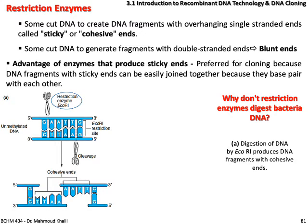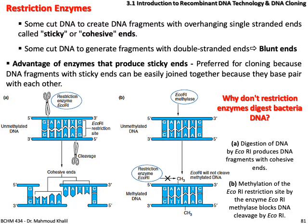Why don't restriction enzymes digest the bacteria's own DNA? If we look at this diagram, the restriction enzyme ECO-R1 can recognize the restriction site and produce an unmethylated form of DNA, cleaving it into two cohesive ends. However, in bacteria, this restriction site is methylated. Once the restriction site is methylated, the ECO-R1 enzyme cannot recognize it. That's how bacteria protect their own DNA from being cut by their own enzymes.